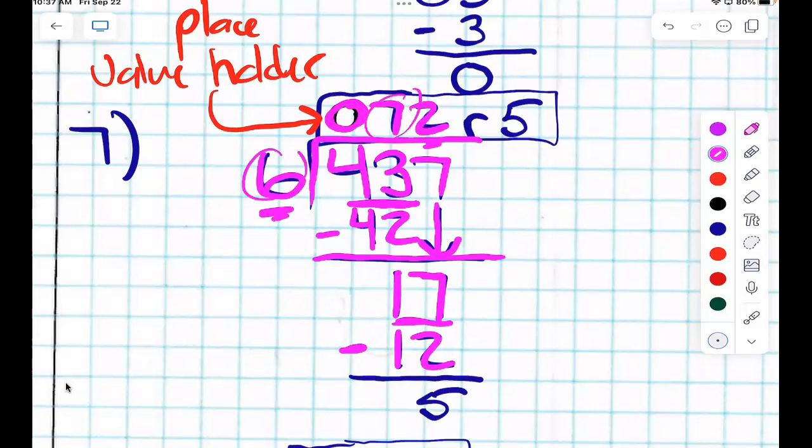Does McDonald's, I'm now done with multiplying, does McDonald's serve? What does serve represent? Subtract. And what am I going to subtract? 17 minus 12. And what do you get when you subtract that? Five. So I've now subtracted. Does McDonald's serve burgers? What does burgers represent? Bring down. Is there anything over here to bring down? No. So I still have a leftover number, which is called a? Remainder.